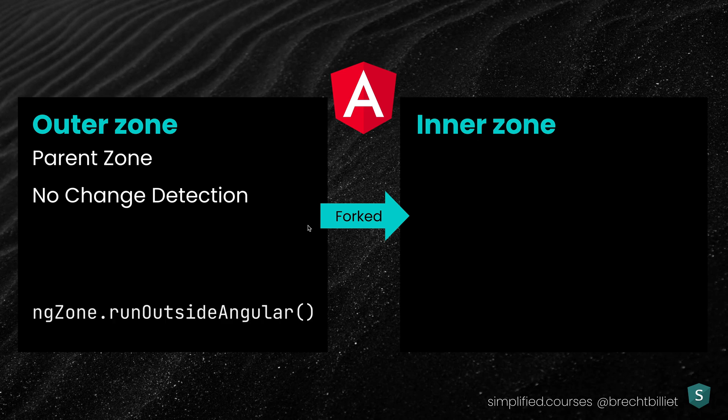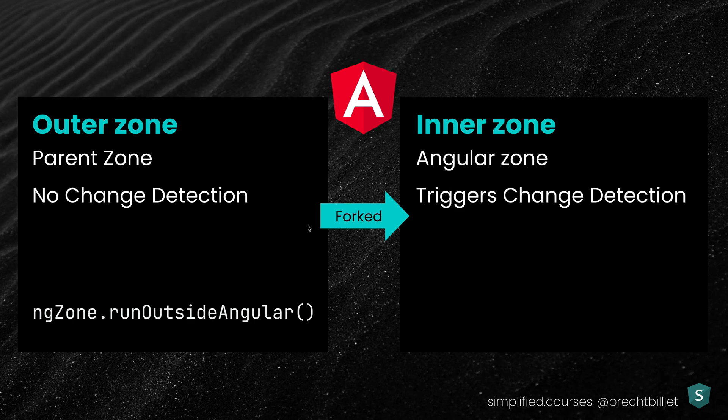If you want to use the outer zone, there is this method on ng-zone called runOutsideAngular. All the code written inside of that function will be executed in the outer zone. The inner zone is also called the Angular zone, and it will always trigger Change Detection whenever a subscribed event happens. It runs by default, but if you're running in the outer zone, you can leverage the run method from ng-zone to go back into the inner zone.